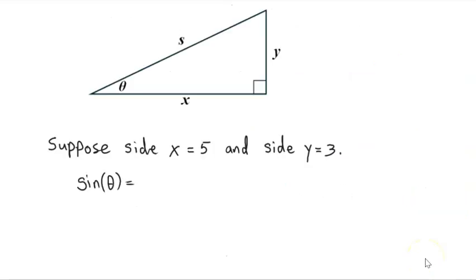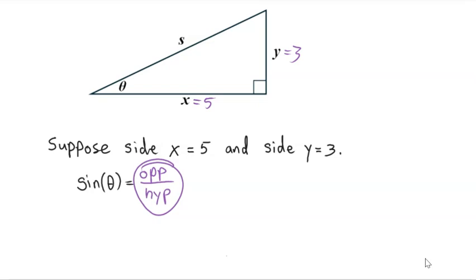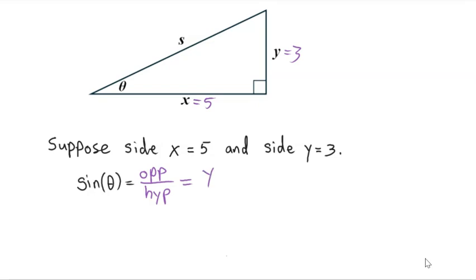Here's the first example. We're told that side X is equal to 5 and side Y is equal to 3, and we want to know what is the sine of theta. X is the adjacent side to theta and Y is the opposite side to theta. Sine of theta means the ratio of the opposite over the hypotenuse, and S is the hypotenuse here. So the opposite of theta is Y, and we're going to do Y over S.